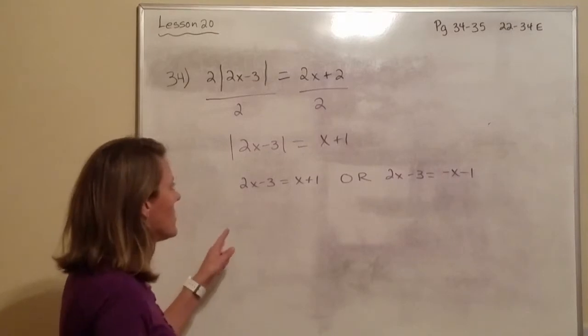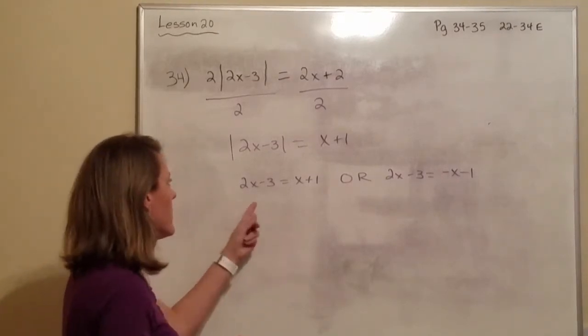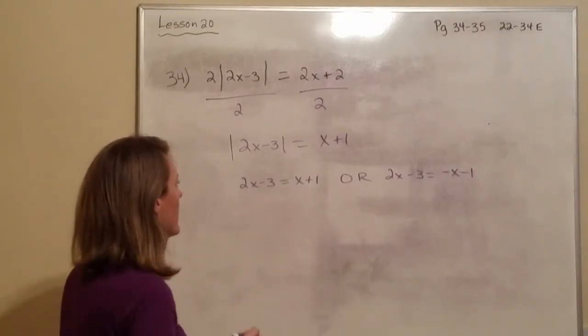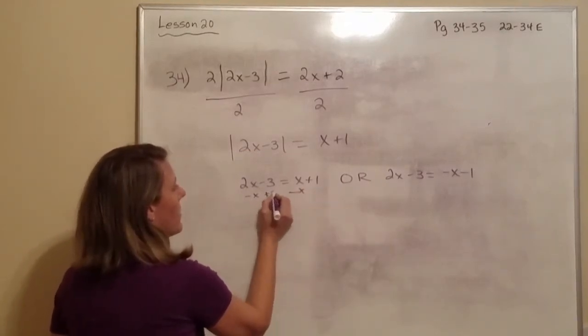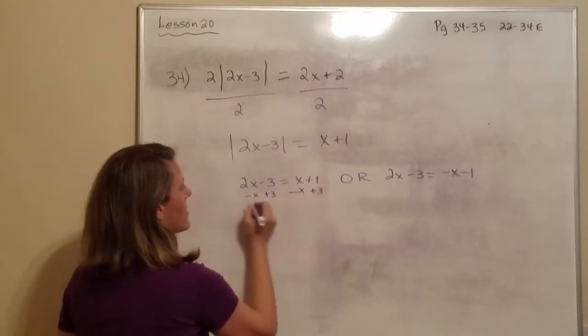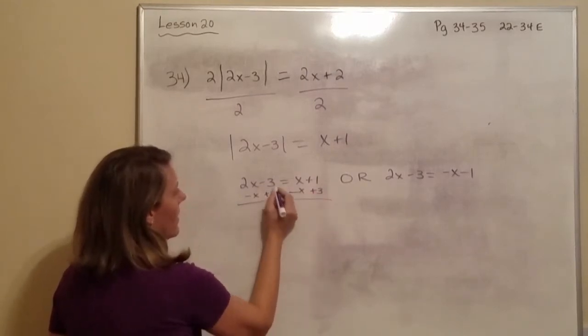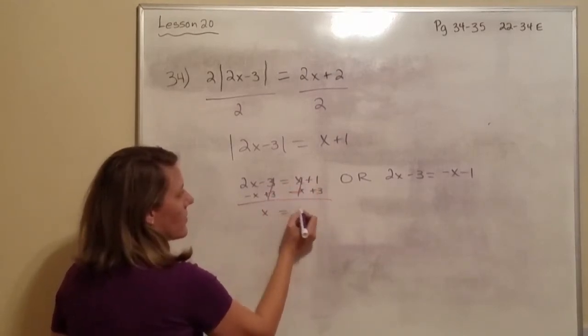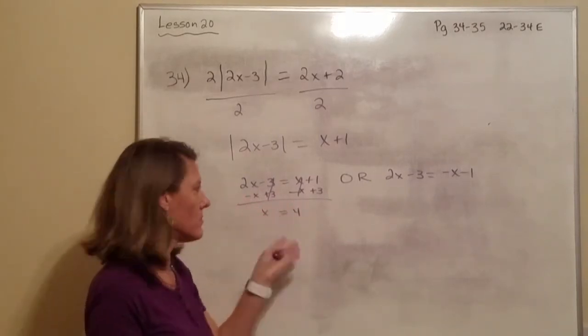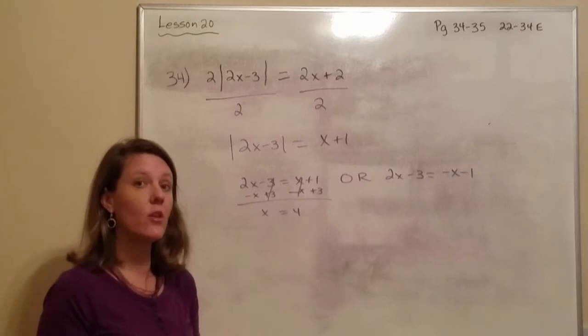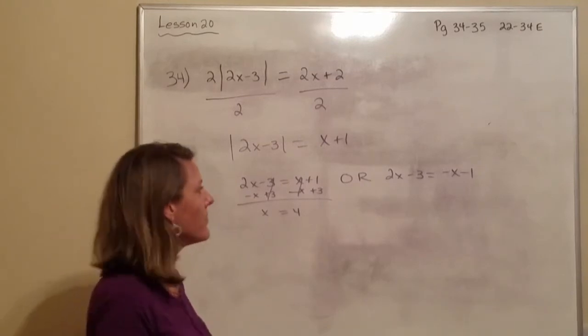Okay. So now we're going to solve this one and then we'll go do that. So I'm going to subtract x from both sides and add 3 for both sides. So we have x equals 4. Alright. So I just did two steps all at once. Because now that you're in algebra 2, you can do stuff like that. Alright.